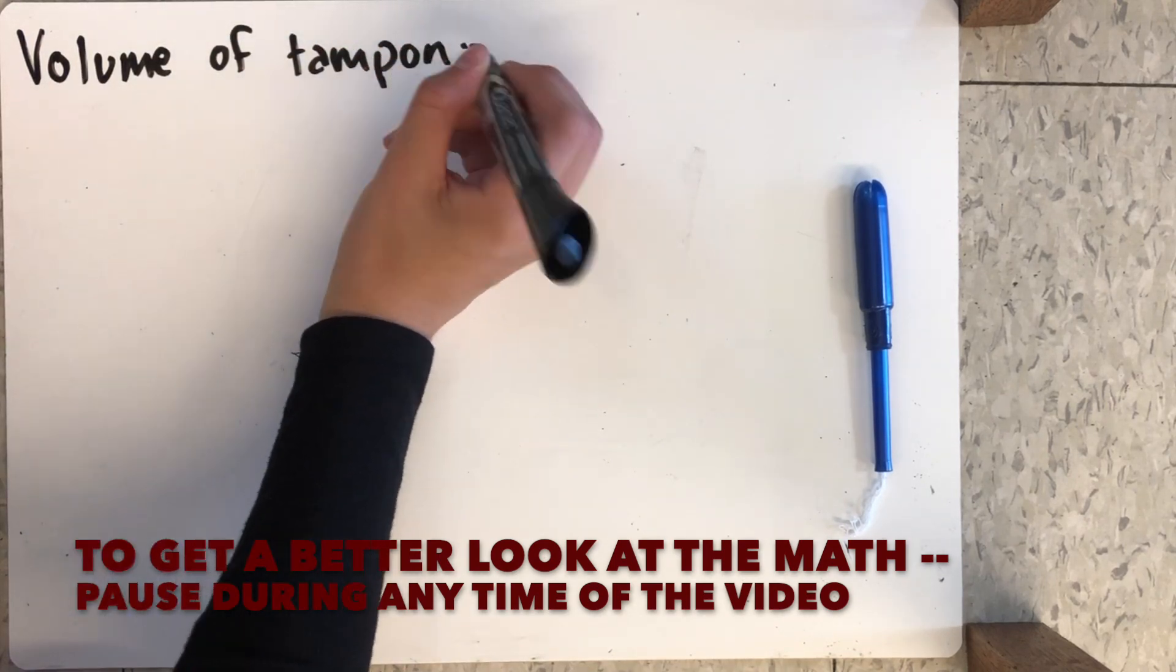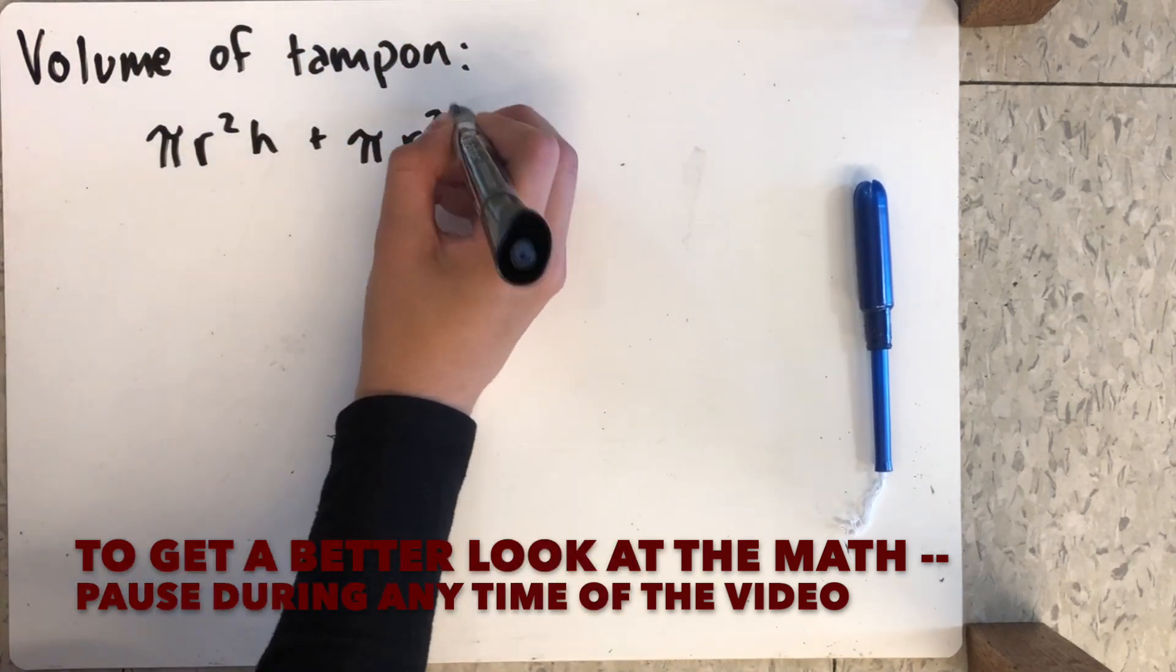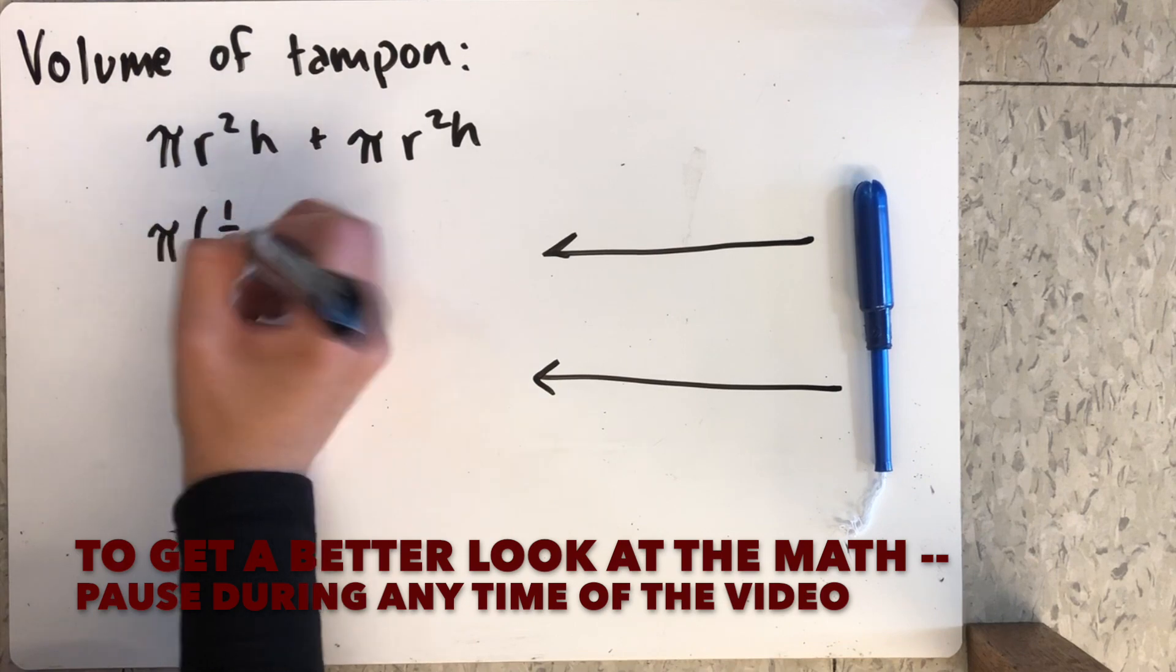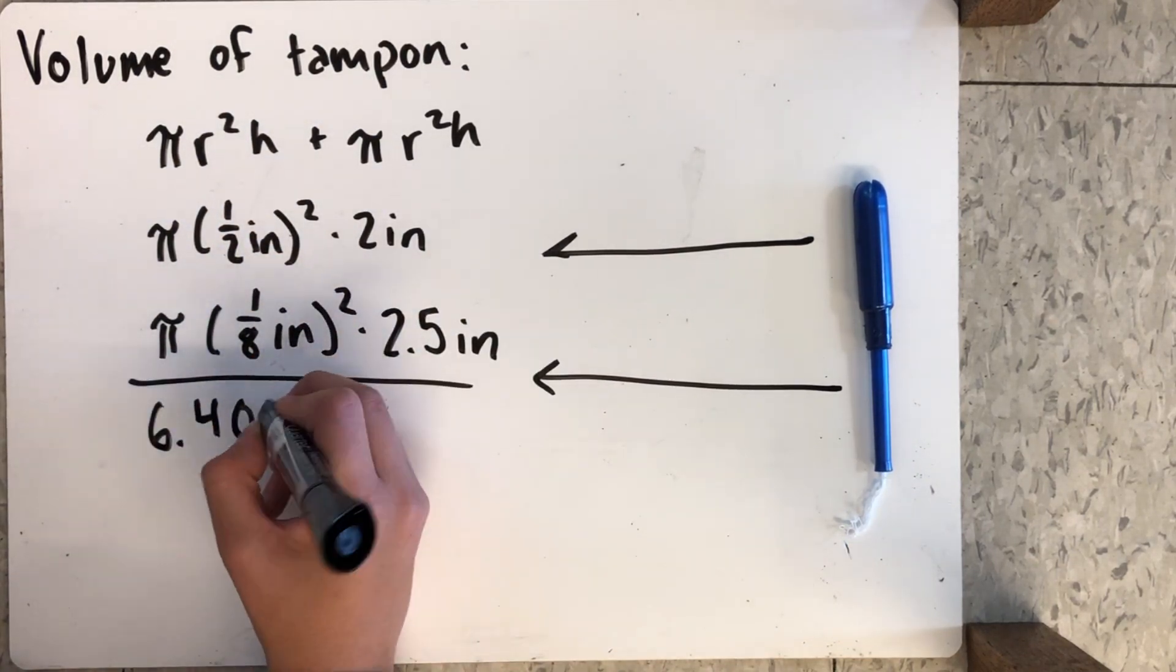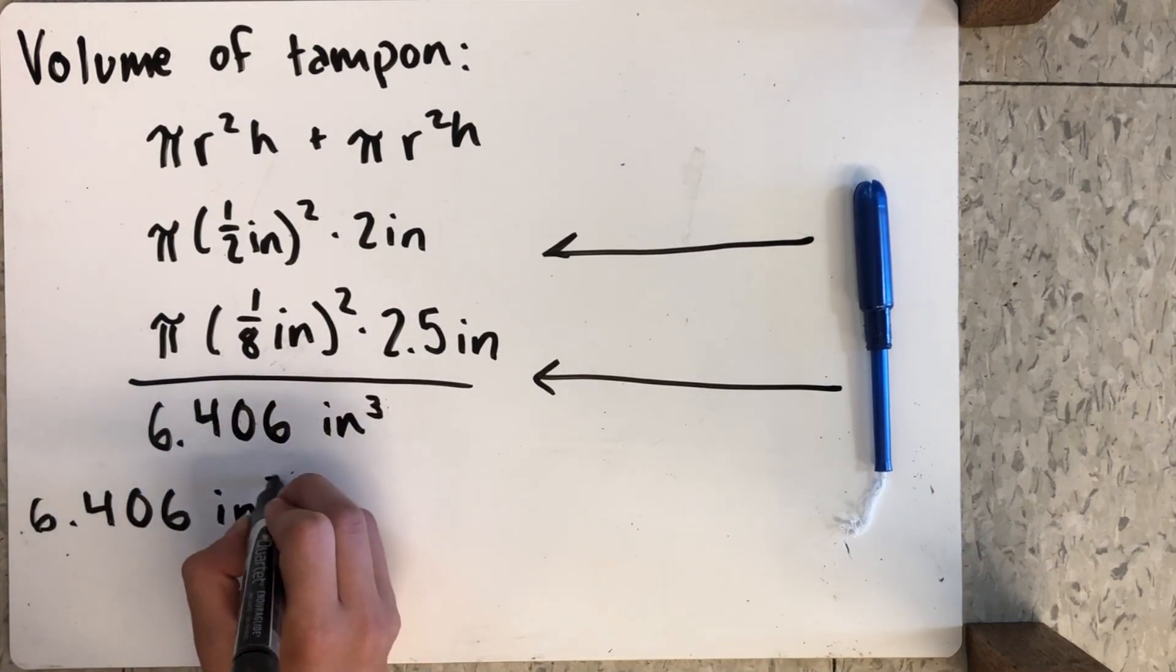We start off by finding the total volume of a tampon. We use two parts of the tampon, the top and the bottom part, because both have different volumes. Using the basic formula for the volume of a cylinder, we found that a tampon is equal to 6.406 inches cubed.